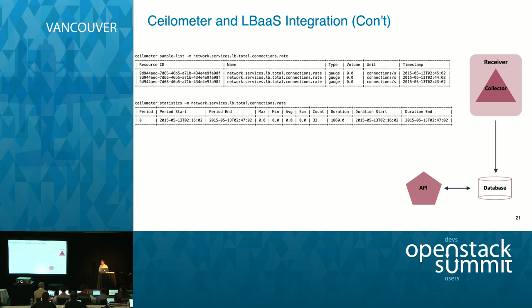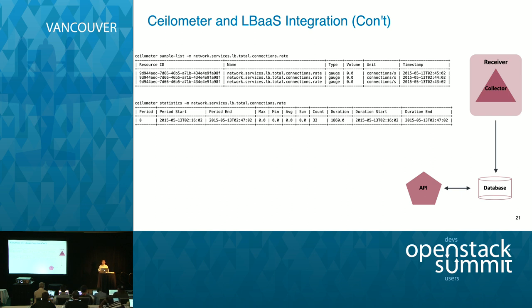One of the beauties of Ceilometer is how highly customizable it is. You can create your own agents to grab information not only at the infrastructure level but also at the application level, send it to the collector, and integrate it into your database. By default the polling interval is 600 seconds — 10 minutes — and we don't have the time or patience to wait that long. So I intentionally trimmed the interval down to the minimum value of 60 seconds. The 'ceilometer statistics' command gives you the minimum, average, and maximum values of a meter over a certain period of time.